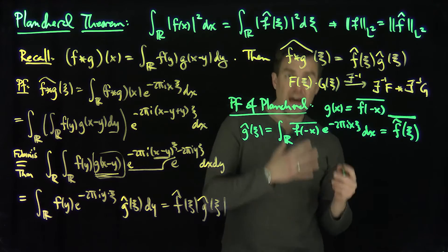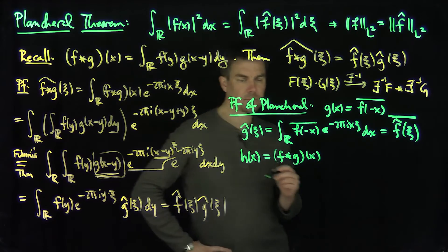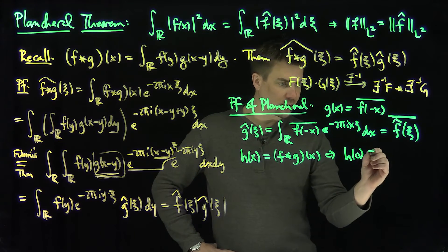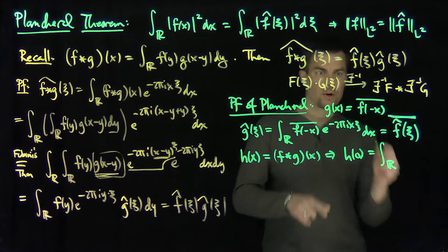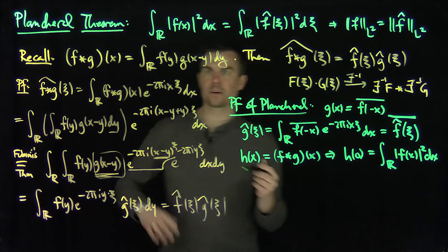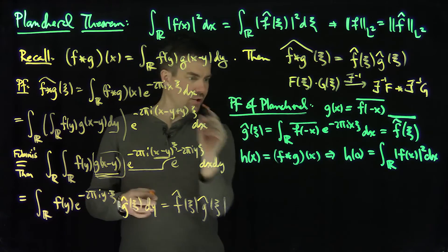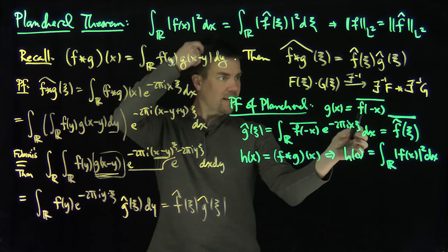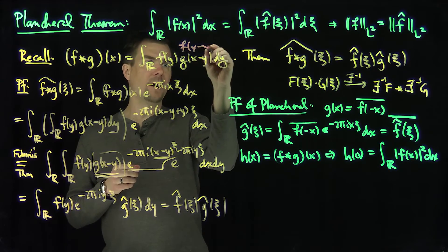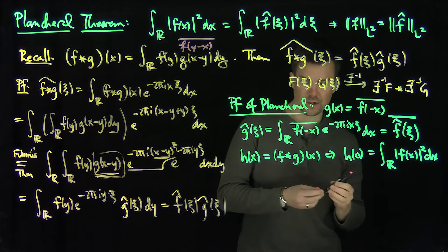Now I'm going to consider a new function h = f*g. The first thing to observe is what h(0) is. Plugging x = 0 into the convolution formula with g(y) = conj(f(−y)), we get h(0) = the integral over ℝ of f(y)·conj(f(y)) dy, which is the integral of |f(y)|² dy. So h(0) equals the L2 norm of f squared.